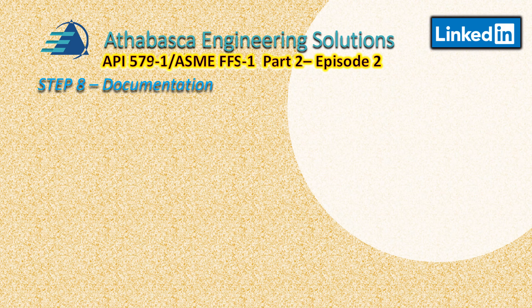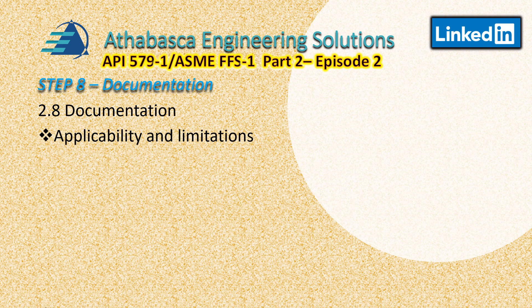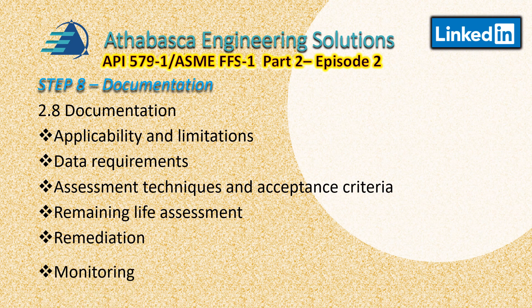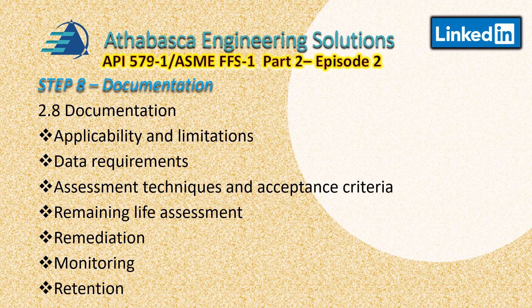Everything in the documentation must be reproducible. In some jurisdictions, you must have sufficient information to defend the analysis in court, as professional engineering stamps can be required. The documentation package described in section 2.8 includes: applicability and limitations, data requirements, assessment techniques and acceptance criteria, remaining life assessment, remediation, monitoring, and record retention. We've now gone through all steps one through eight, and all of these are incorporated into the final package.